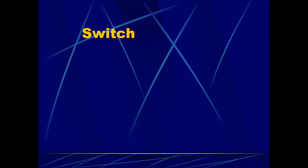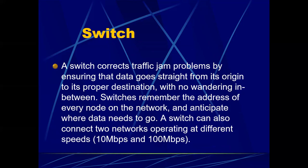What is a switch? A switch corrects traffic jam problems by ensuring that data goes straight from its origin to its proper destination with no wandering in between. Switches remember the address of every node on the network and anticipate where data needs to go. A switch can also connect two networks operating at different speeds.